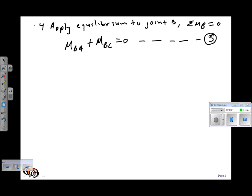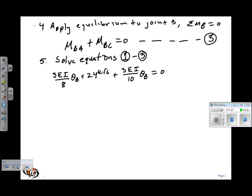So the next step is to solve equations one through three. First, substitute equations one and two into three, and we get 3EI over 8 theta B plus 24 kip feet plus 3EI over 10 theta B equals zero. This yields theta B equals negative 320 over 9EI.